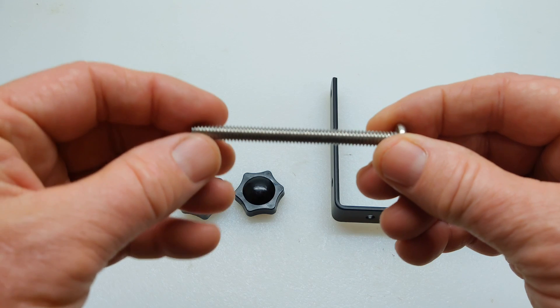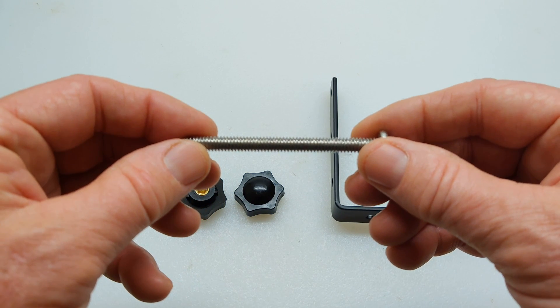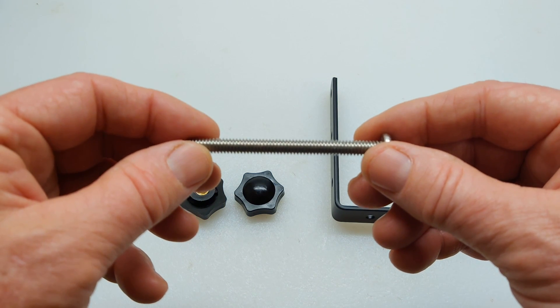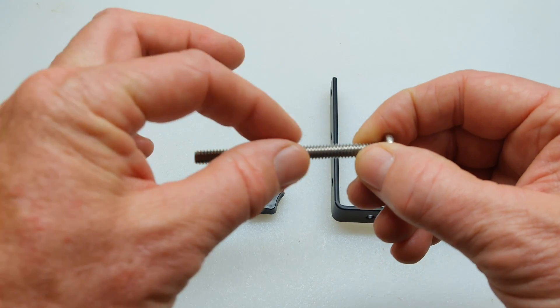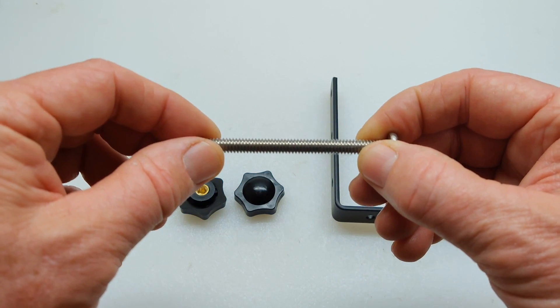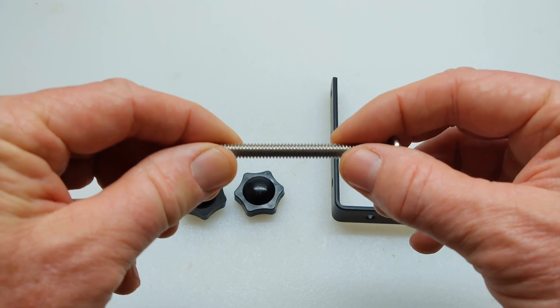This is just a 1 quarter by 20 stainless steel screw. Since I don't have any all thread, what I'm going to do is measure the length that I need for this project and then just cut off the excess.